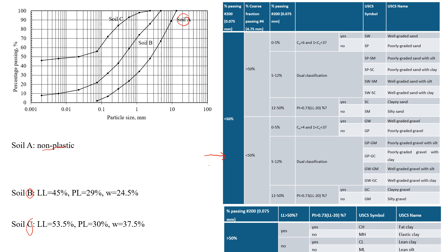Starting with Soil A, the first thing we're going to check is how much fines it has — specifically the percentage passing through Sieve 200, which is the 0.075 mm size. We can see that for Soil A it will be about 2%. Since fines are less than 50%, we're going to use the top chart.